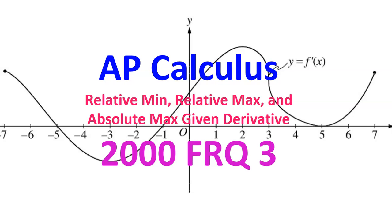In this video, I will walk you through free response question number 3 from the 2000 AP Calculus exam. This problem is primarily about finding the relative or absolute max or min given the graph of the derivative.